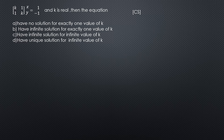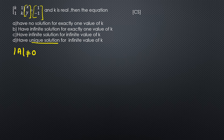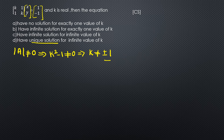Given matrix [[k,1],[1,k]] times [x,y] equals [1,-1] where k is real. For a unique solution, the determinant must not equal 0: k squared minus 1 ≠ 0, so k ≠ plus or minus 1. This equation has a unique solution for all values of k except plus or minus 1, so option D (unique solution for infinitely many values of k) is true.